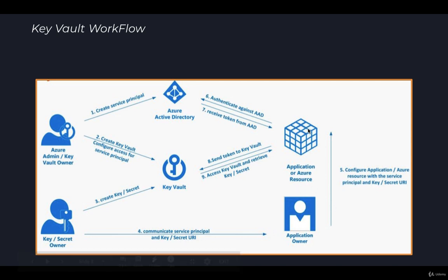The developer or application owner then configures the application or Azure resource with the service principal and the key or secret URI provided by the owner. After that, the application authenticates with Azure AD in step six. Azure AD verifies the resource, and in step seven the application receives an intern token from Azure AD. In step eight, the application presents that token to the Key Vault. Since access has already been provided to this service principal registered with AD, the token is accepted and the Key Vault provides access so the application can retrieve the secret and perform operations like encrypt or decrypt.